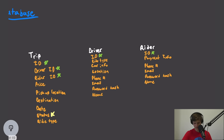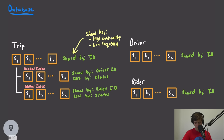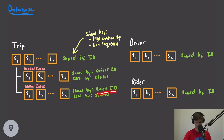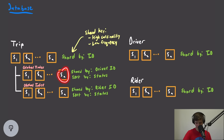We still need to search for driver ID and rider ID on our trips table. To do that, we're going to introduce a global index — essentially another sharded database where each record contains the ID we're indexing on and a reference to the main table. We'll have one global index sharded by driver ID and one sharded by rider ID. Within each partition, we can sort the data by status, allowing us to quickly look up by status.